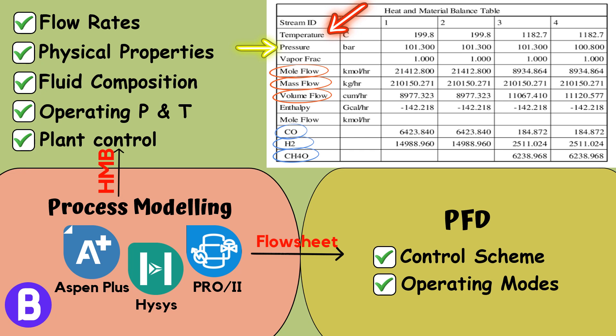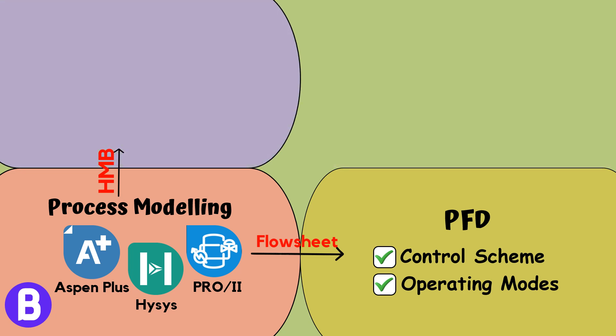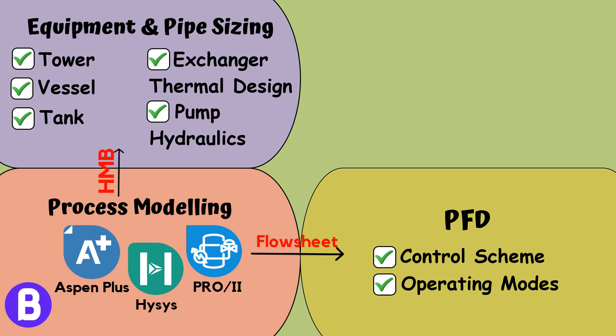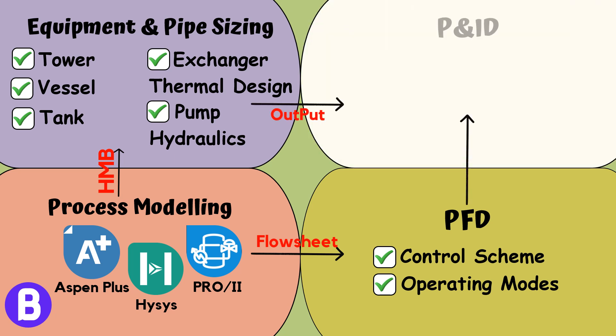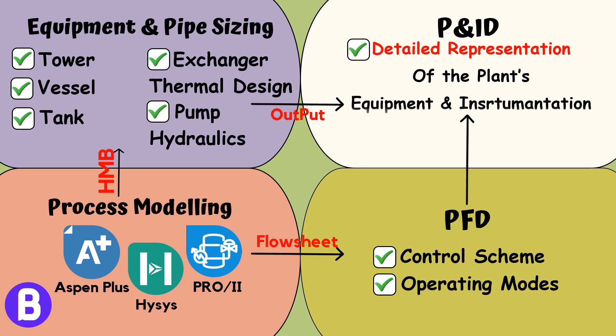Based on this information, downstream activities can be initiated, such as pipe and equipment sizing, hydraulic activities, equipment and line lists, P&ID, control system logic, equipment protection and shutdown logic, utility and effluent summary, PSE sizing and flare system requirements, and instrument specification process data.